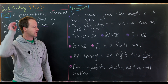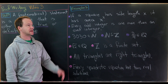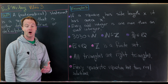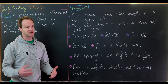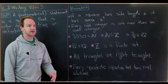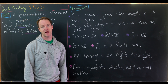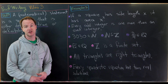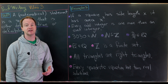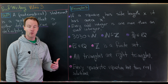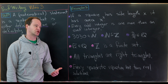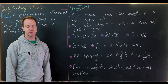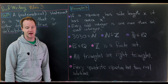Some non-examples of mathematical sentences: 'for all integers n' is just a phrase — a setup for a statement, not a statement itself. Or 'what is the solution to x² + 3x = 1?' — a question is neither true nor false, though once you write down an answer it would become a mathematical statement.